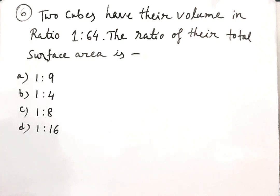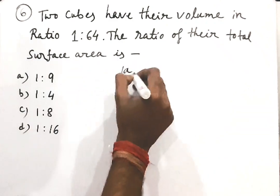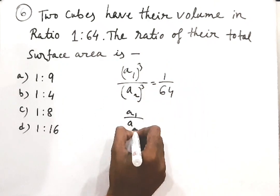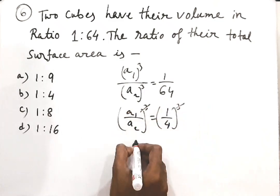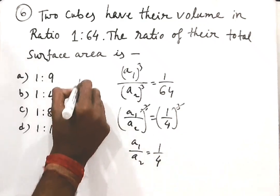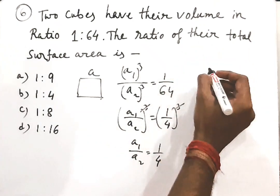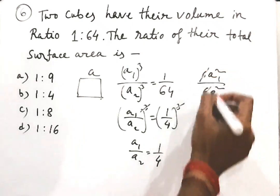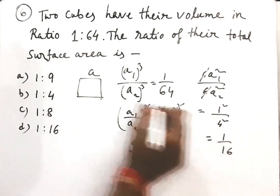Next question: two cubes have their volumes in the ratio 1 to 64. Find the ratio of their total surface areas. Volume ratio: A1³ by A2³ equals 1 by 64, so A1 by A2 equals 1 by 4. Total surface area is 6A², so the ratio of surface areas is 6A1² by 6A2², which gives 1² by 4² equals 1 by 16. That is the answer.